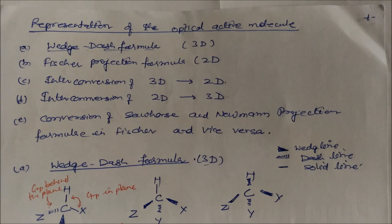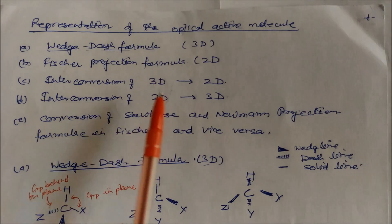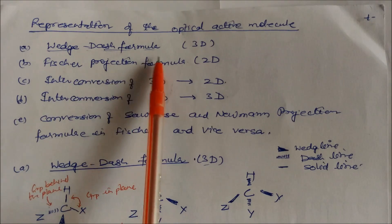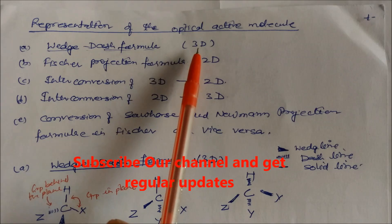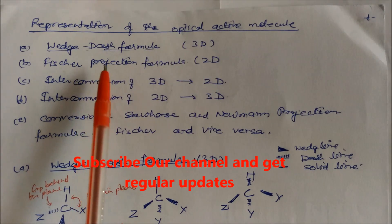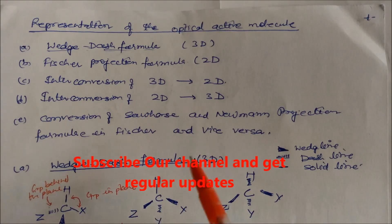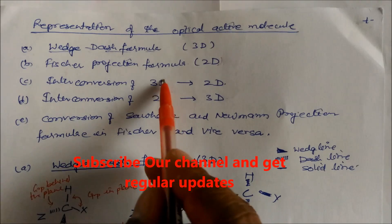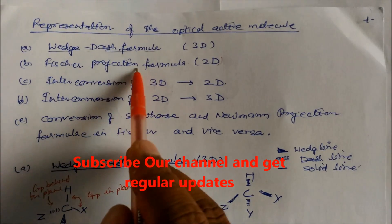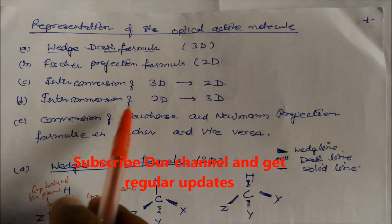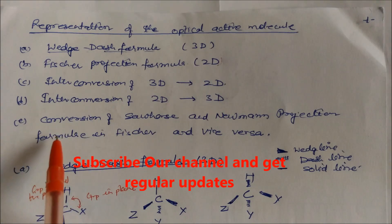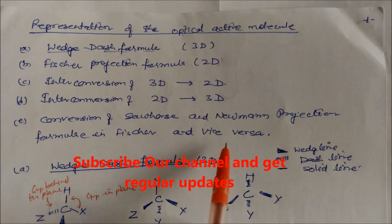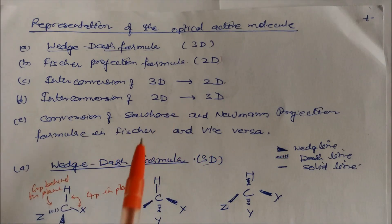Today we will learn how to represent an optically active molecule. There are different types of representation: first is the wedge-dash formula, which is meant for three-dimensional molecules; second is the Fischer projection formula, which is for two-dimensional molecules. Next is interconversion of 3D into 2D — converting wedge-dash into Fischer projection — and the reverse, 2D into 3D. Finally, conversion of Sawhorse and Newman projection formula into Fischer and vice versa.